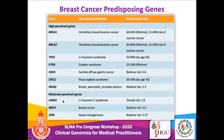For the moderate-penetrant genes, the common ones include CHEK2, BRIP1, and ATM. As mentioned, most of these moderate-penetrant gene variants increase the risk of cancer by about two to fivefold, whereas the high-penetrant genes carry a higher risk.